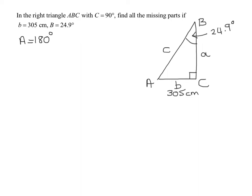So angle A is 180 minus angle C, which was 90 degrees, minus angle B, which was 24.9 degrees. Excuse the bad handwriting. So A equals 65.1 degrees.